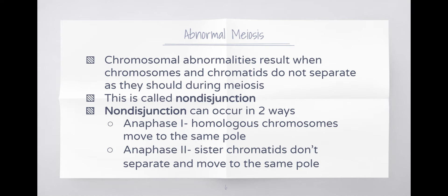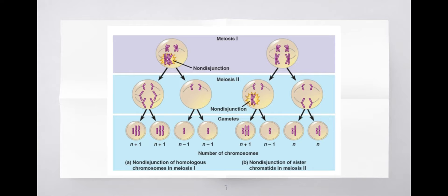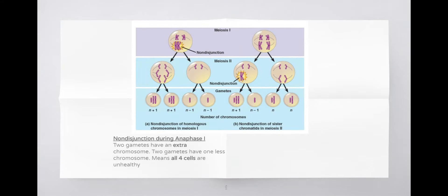Our success criteria today is understanding when non-disjunction occurs: Anaphase 1 and Anaphase 2. When we diagnose chromosomal abnormalities, we actually don't know which phase the abnormality occurred in, but we know it can happen in either Anaphase 1 or Anaphase 2. In your notes there is a picture and a chart below it covering non-disjunction during Anaphase 1 and non-disjunction during Anaphase 2.